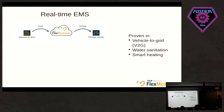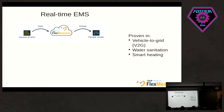FlexMeasures is a platform that takes in a lot of data, like meter data or prices and all these things, and it gives you the best timing for your flexible assets — that's a very simplified picture of what it is. We have used it in a couple of areas: bidirectional charging, in industry, in water sanitation, and now we're working on smart heating as well.